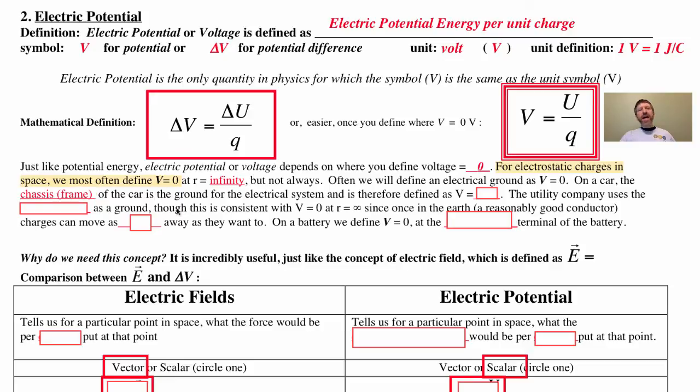The utility company uses the earth as a ground, although that particular definition is consistent with V equals zero at R equals infinity, since if you have a charge that's in the earth, a reasonably good conductor, they can move as far away as they want to. Now, on a battery, we define V equals zero as the negative terminal of the battery. Again, once we define that V equals zero point in space, then we can easily calculate changes just by using the final minus the initial.